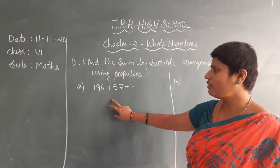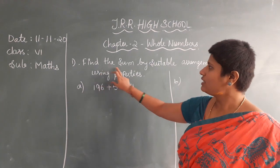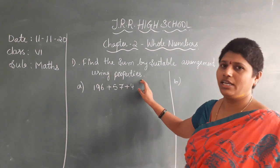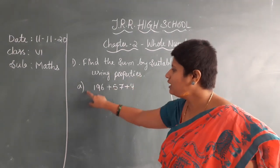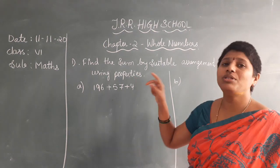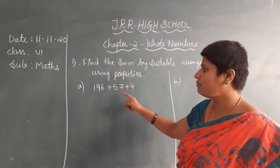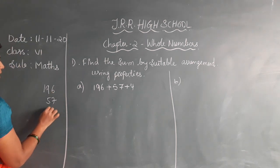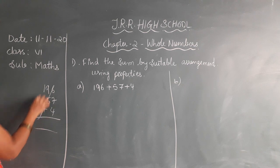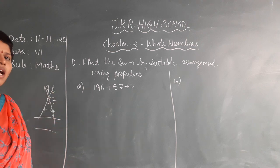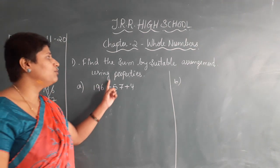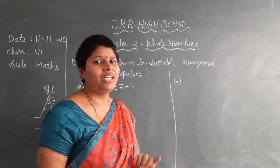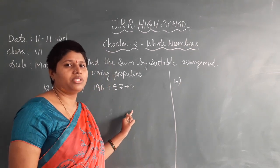Here comes the first question. Find the sum by suitable arrangement using properties. You have to find the sum of these three numbers by using the properties — don't simply add them. The question is you have to use the properties: commutative and associative. We will see how we are going to use them.